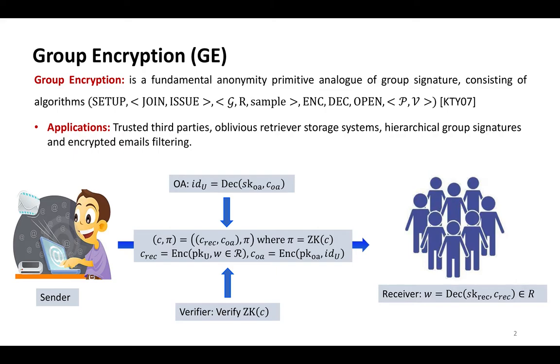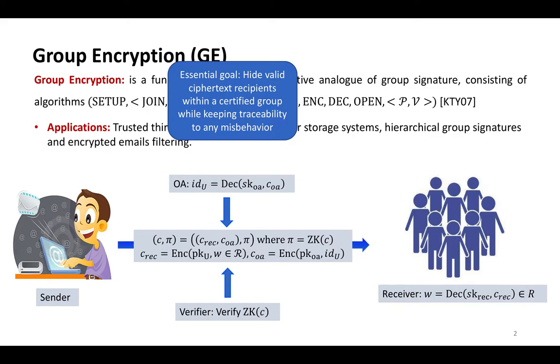Group encryption is a fundamental anonymity primitive analogous to group signature. By concerning valid recipients for specific ciphertext within a group of certified users while keeping traceability to any misbehavior, it provides confidentiality, anonymity, and traceability. Since its first introduction, group encryption has found wide applications in the real world, such as trusted third parties, oblivious retrieval, storage systems, hierarchical group signatures, and encrypted email filtering.